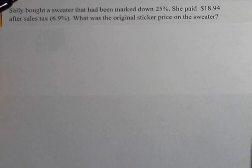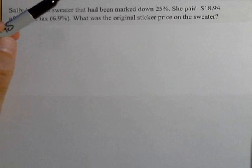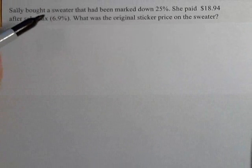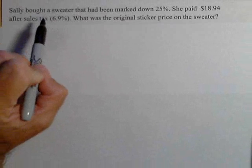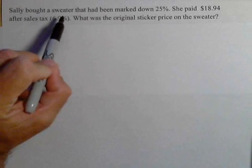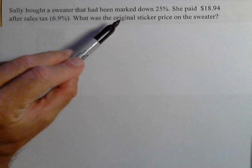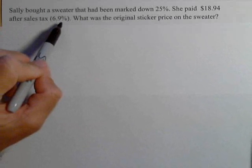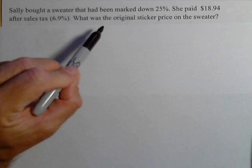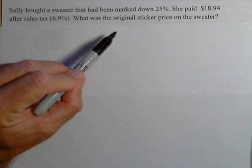Now in this problem, we're going to look at what happens when something is marked down by 25% and somebody has to pay a sales tax. We're going to find out what the original price was. So here's the situation. Sally bought a sweater that had been marked down 25%. She then paid $18.94 after sales tax, which was calculated at 6.9%. What was the original sticker price on the sweater?